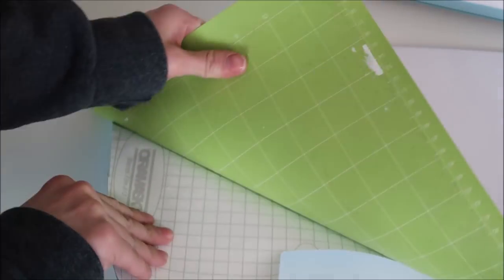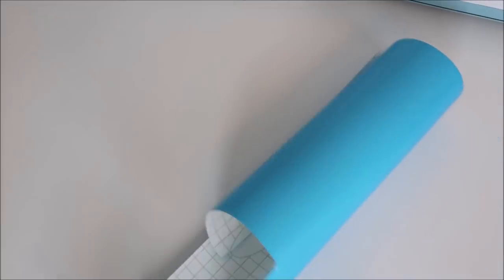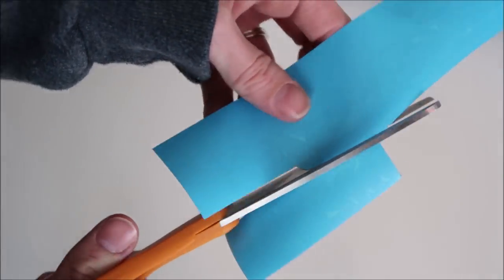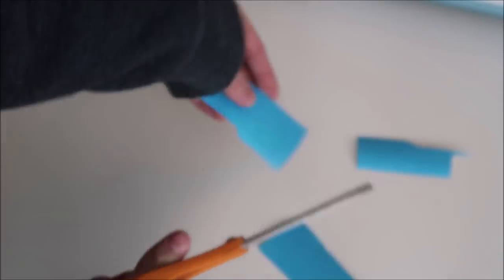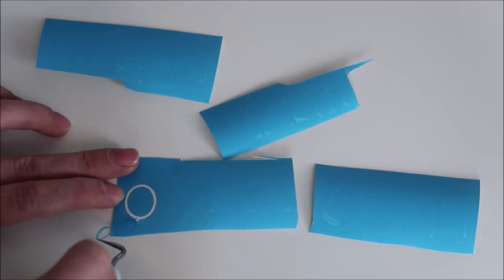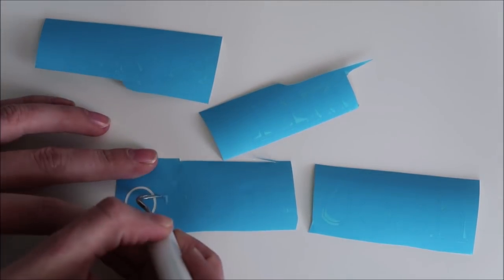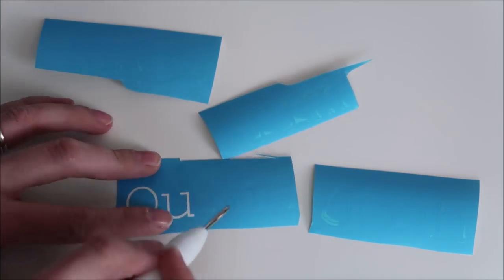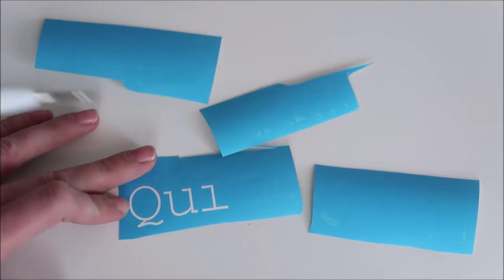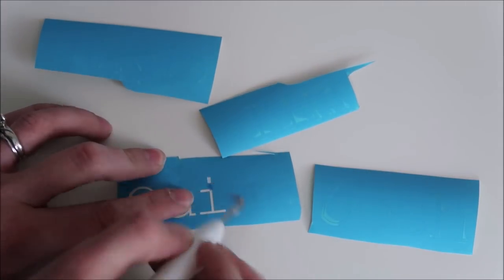Then I take my stencil off of the mat and cut out each stencil name. After that I weed my vinyl. Since this is a stencil you want to weed out the opposite of what you normally would. So you want to weed out the letters instead of the background.